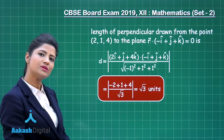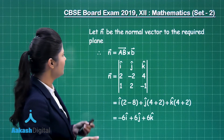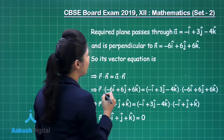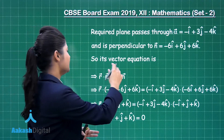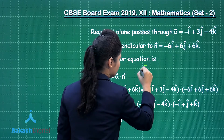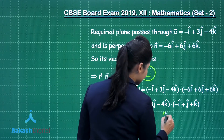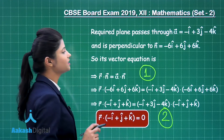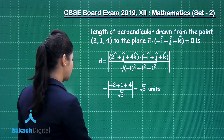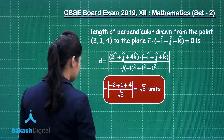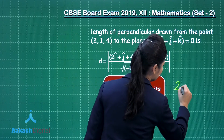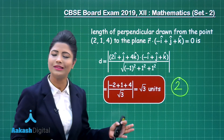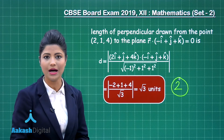This was a 6-marker question: obtaining N vector gives 1 mark; obtaining the vector equation gives 1 mark; solving for the final equation gives 2 marks; and obtaining the perpendicular length as √3 gives 2 marks — totalling 6 marks. In this way you can solve these types of questions.